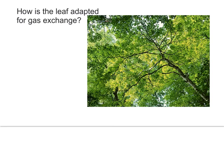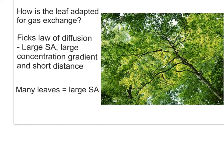Let's look at how the leaf is adapted for efficient gas exchange. For photosynthesis, it's important that carbon dioxide is able to diffuse into the leaf, as it is one of the reagents needed. It's also important that the cells have a good supply of water. At night, when there's no light, oxygen will be needed for respiration and carbon dioxide will be produced as a waste product. Fick's law states that for efficient diffusion, there must be a large surface area, a short diffusion distance, and a large concentration gradient.